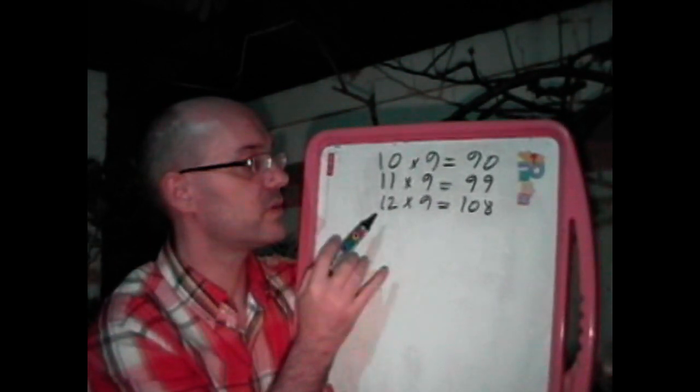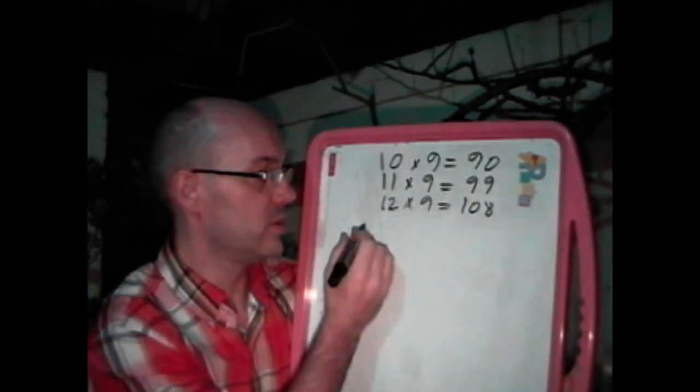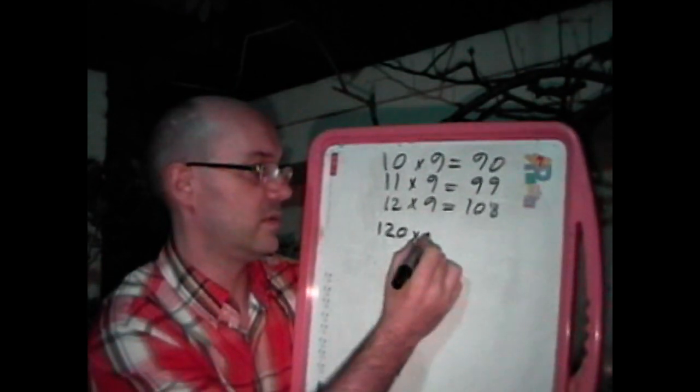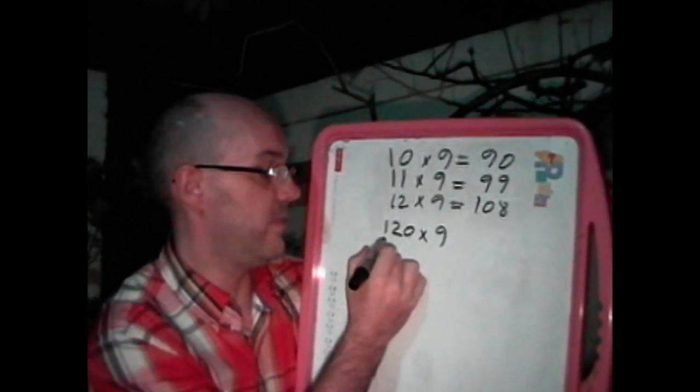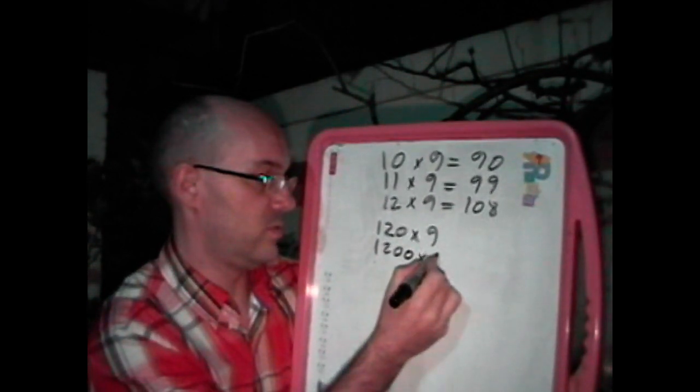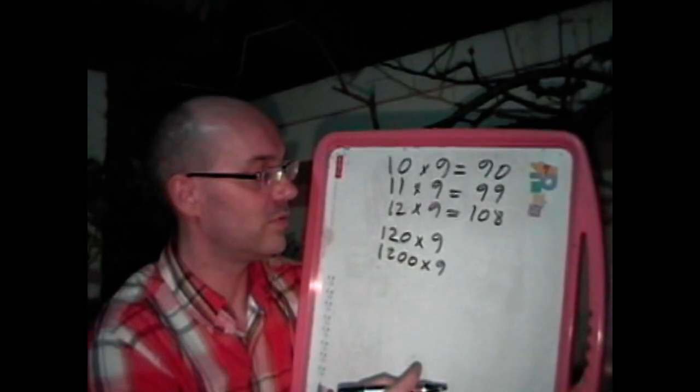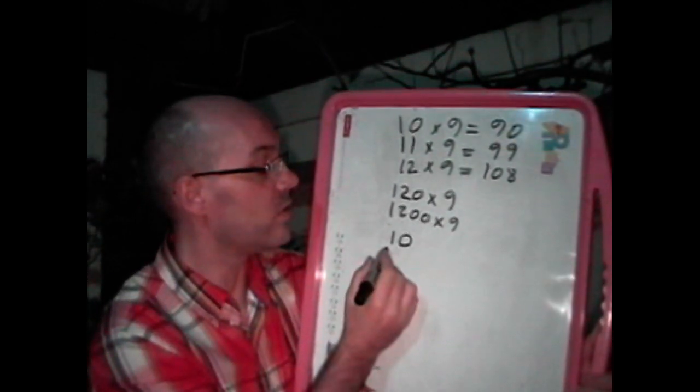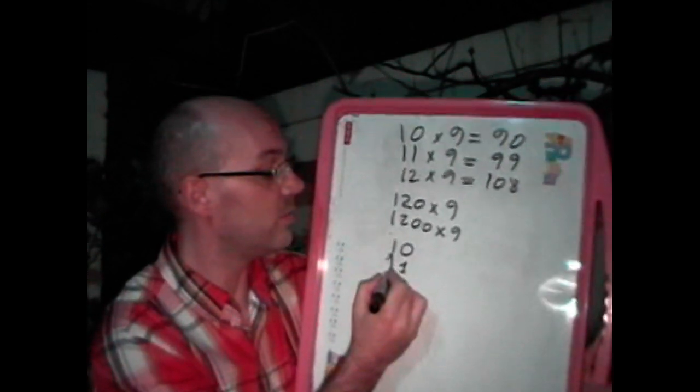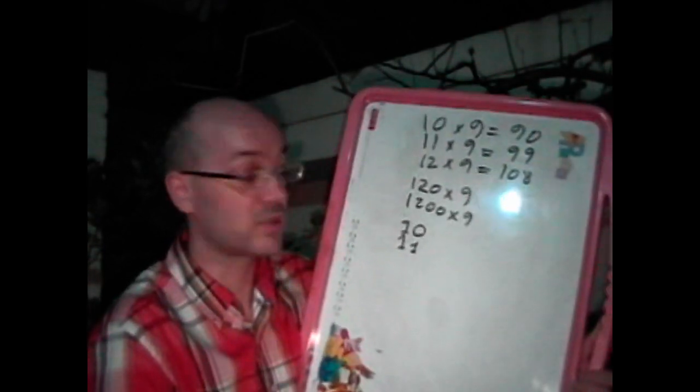But this is going to give us a very important clue. 12 times 9 is a three-digit number, so we know 120 is going to be a four-digit number and won't work either, and 1200 will be a five-digit number. So the very important point is the number we're looking for actually starts by 10 or by 11. We don't know the number of digits it has—it can be three, four, five—but we know that it starts with those two digits.